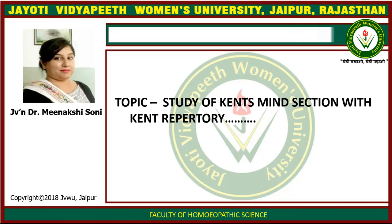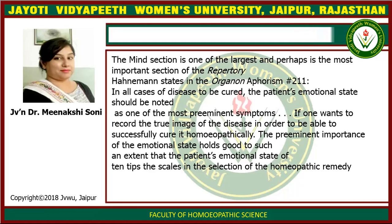This repertory is a proper repertory. Desires, aversions, and many types of desire-aversions are given under the section mind. Different types of rubrics and different typical rubrics are also mentioned in the mind section. These are observed by the physician and also told by the patient, so this is helpful for selection of the medicine. The mind section is one of the largest and most important sections of this repertory.